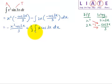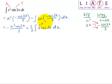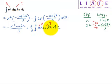So I still have to integrate x cosine 3x, which is again a product of two different functions — the algebraic and the trigonometric term. Going by LIATE again, I'll choose x to be differentiated and cosine 3x to be integrated.